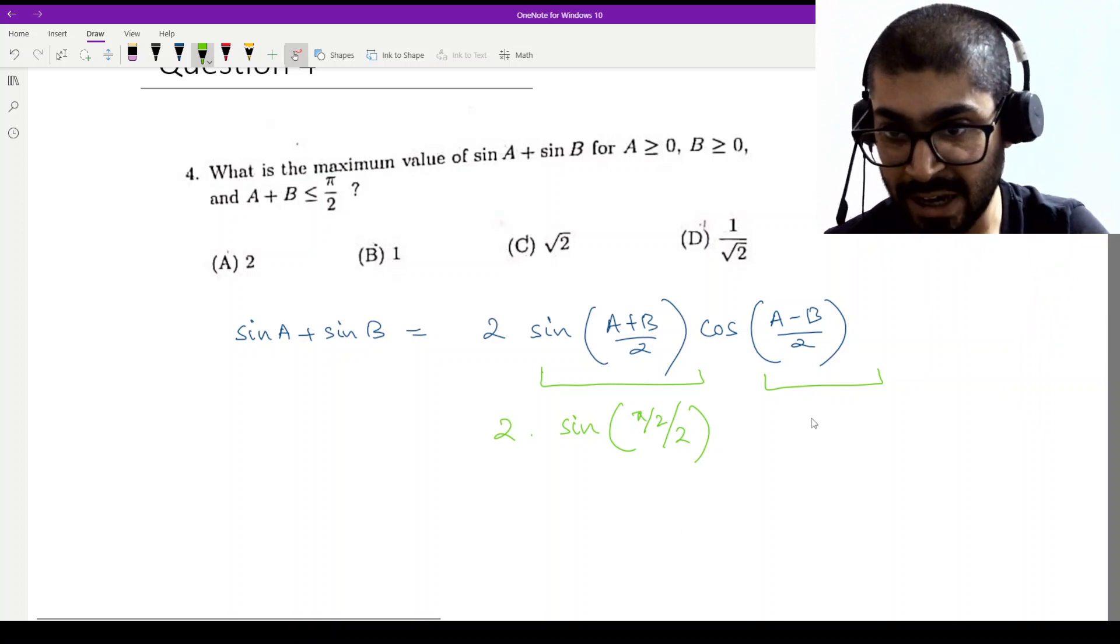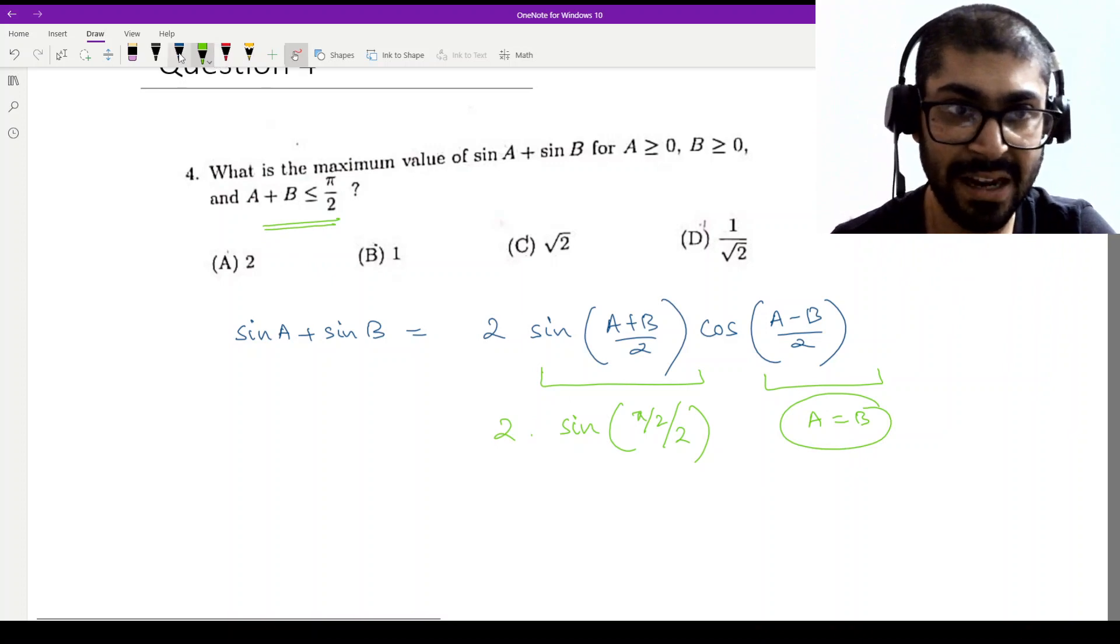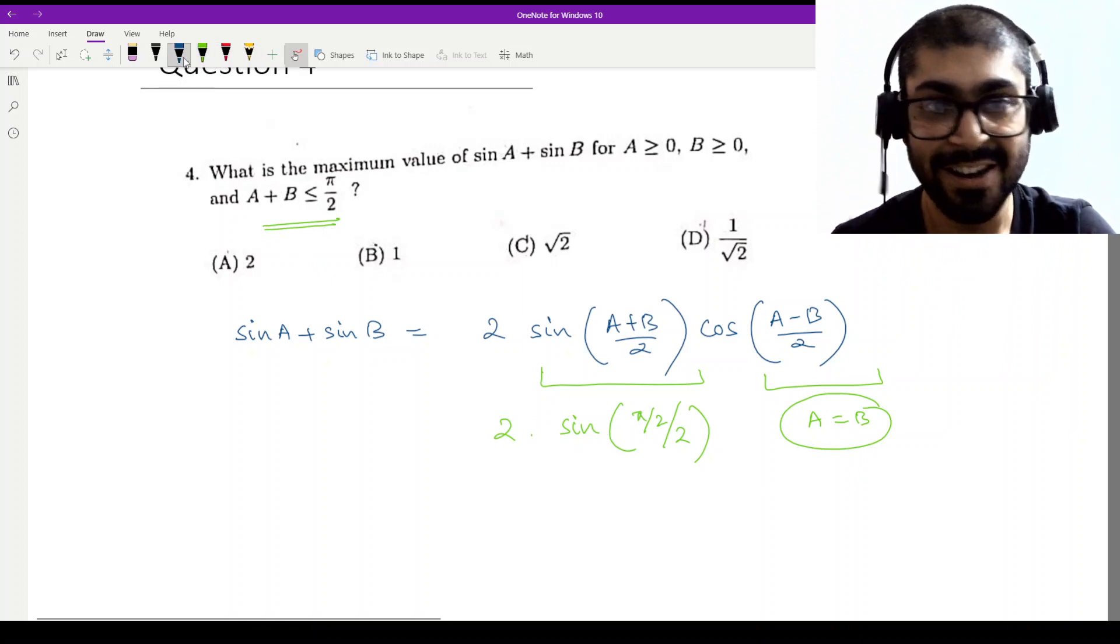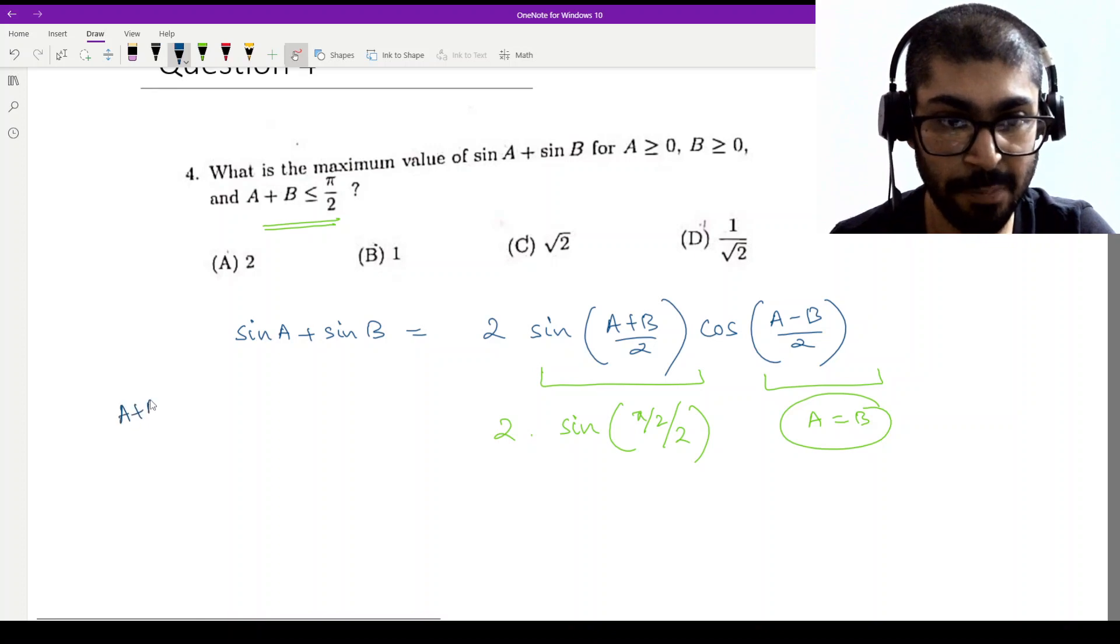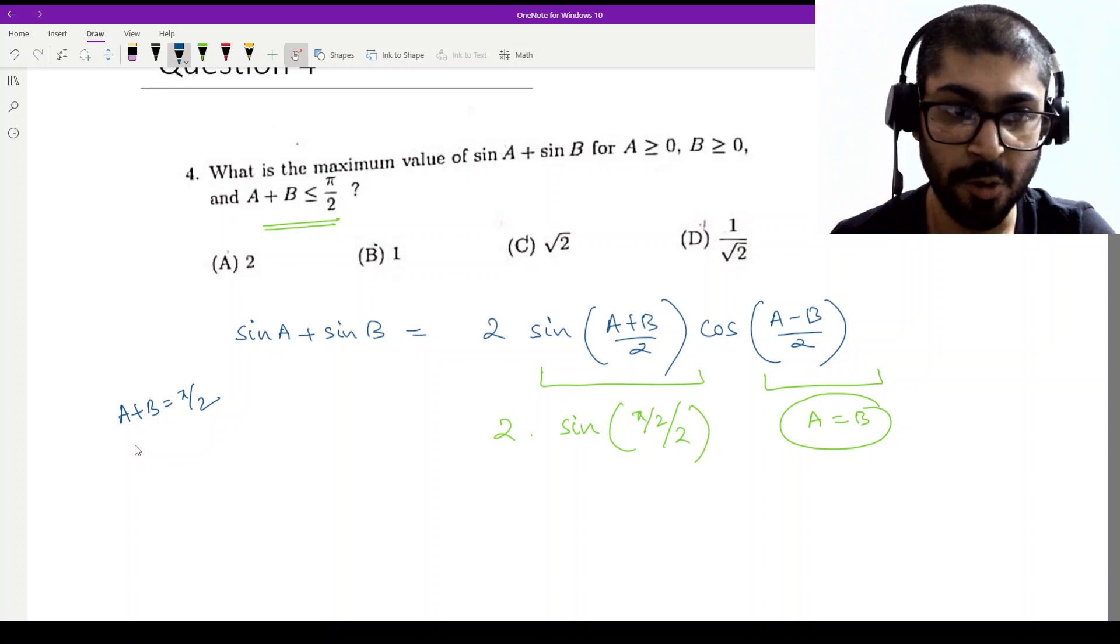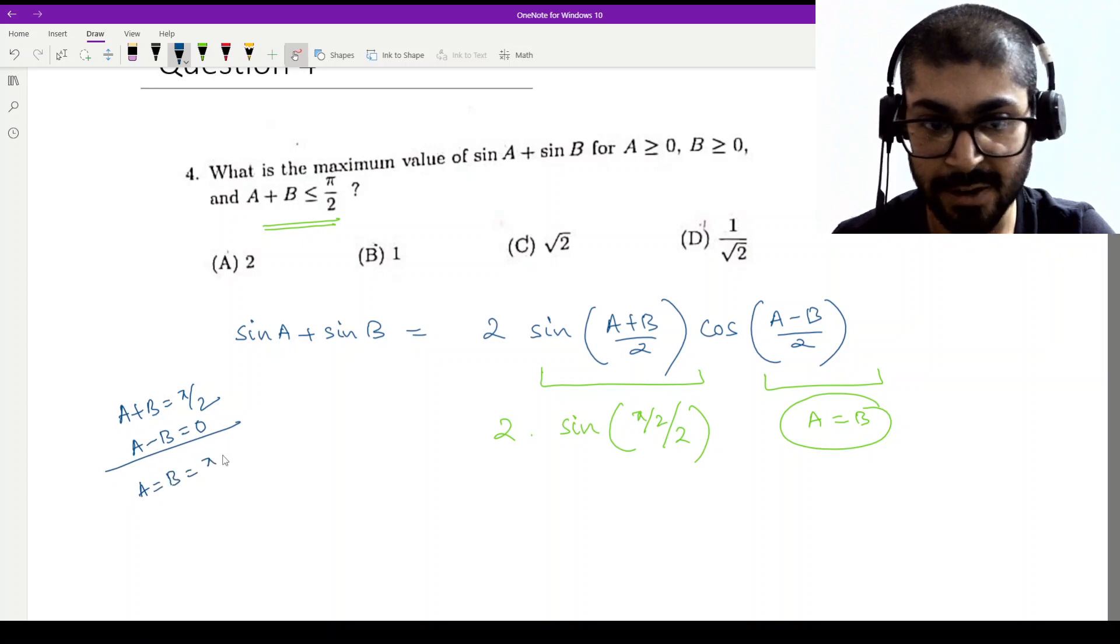So A equal to B we got here. And A plus B maximum value pi by 2 we have used in sin. So what are A and B individual values? Hopefully you have calculated. Here we have A plus B equal to pi by 2, which we have assumed as the maximum value because sin is an increasing function. And for cos we have A minus B equal to 0, or A equal to B. So we have solved this: A equal to B equal to pi by 4.